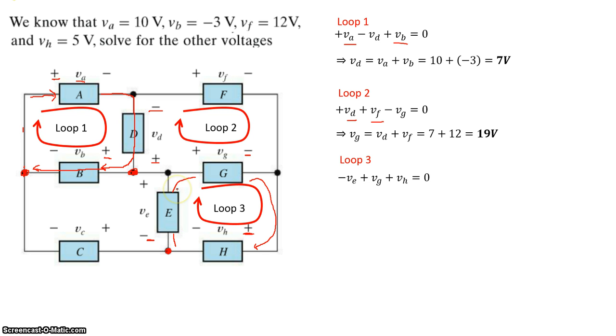Minus VE plus VG plus VH equals zero. We calculated the value of VG earlier as 19 volts. VH is given as five volts. So VE can be calculated as 19 plus 5, which is 24 volts.